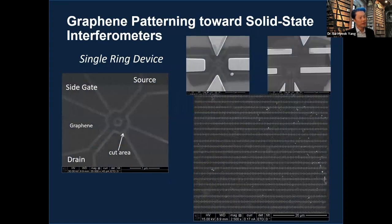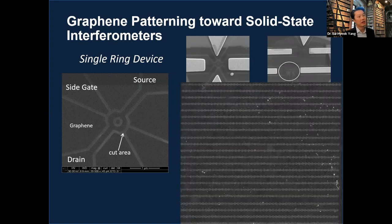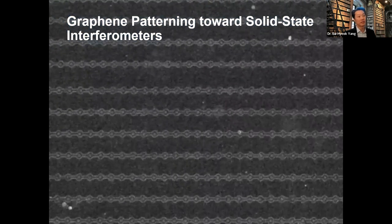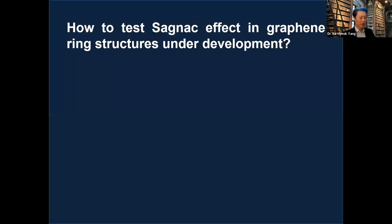About 10 years ago we kickstarted this project of the graphene interferometer, growing and patterning graphene. We made double rings and series of rings. At that time it was still early-stage research and while we succeeded in fabricating these structures, we were not able to get any measurable or meaningful outcome. Now we are trying to pick up where we left off — specifically, how to test the Sagnac effect in a graphene ring structure, which is under development.